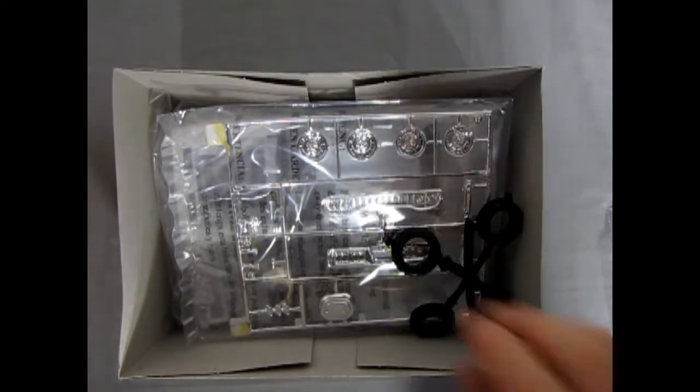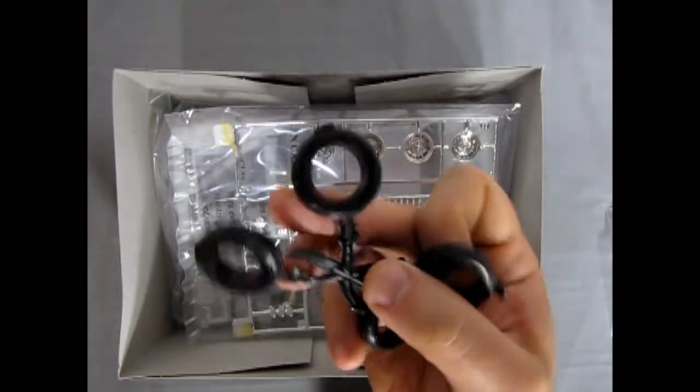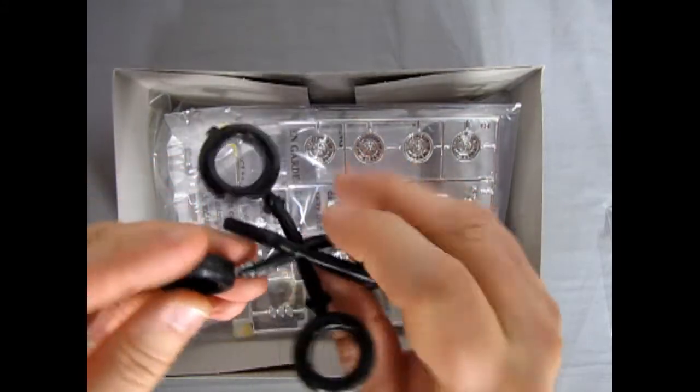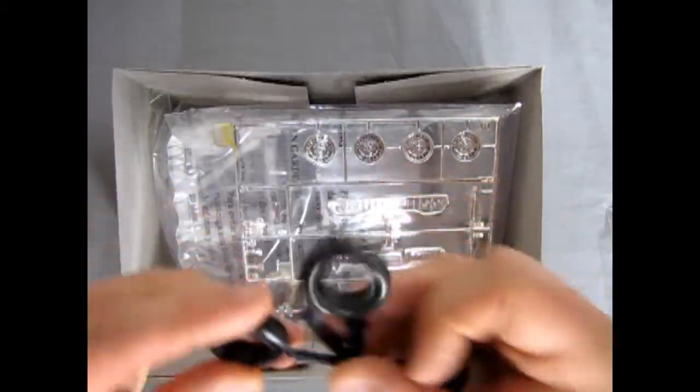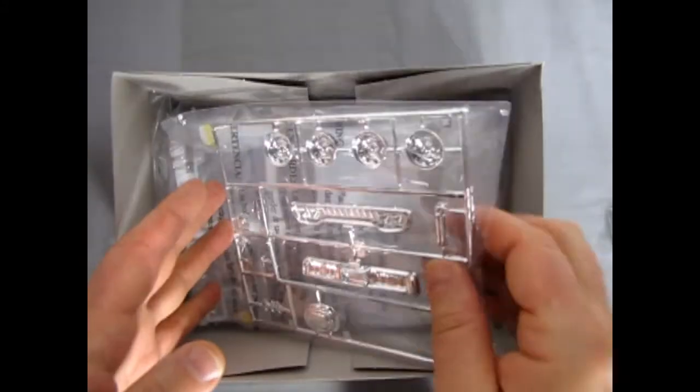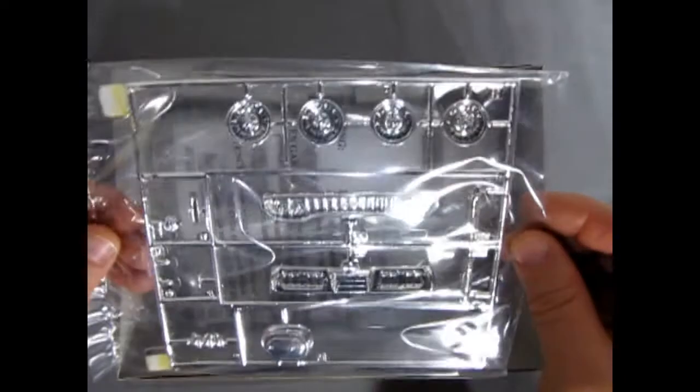All right, so we've got our glass - this time it's in a bag, thank goodness, won't get scratched. Good job. We've got our tires, these are tall and skinnies. We've got our front chrome in plastic so it won't get scratched, which is nice.